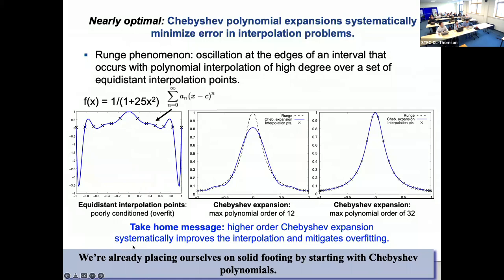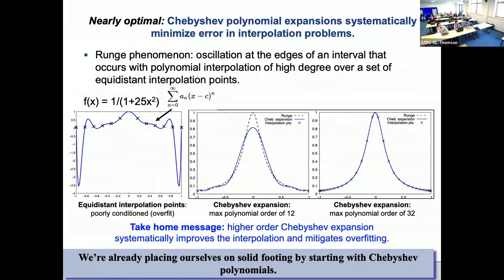Here's the example: the dashed line is the actual Runge function — one over one plus 25X squared. The blue line is a Chebyshev expansion of order 12, and the X's are the interpolation nodes. At order 12 it's not a great representation, but it isn't doing anything chaotic. When I stop at an expansion of order 32, things just get increasingly better — the more polynomials I throw in, the more the error shrinks. The take-home message: a higher-order Chebyshev expansion can systematically improve interpolation and mitigate the Runge phenomenon.